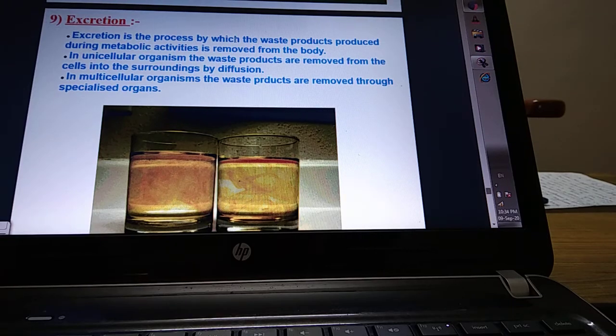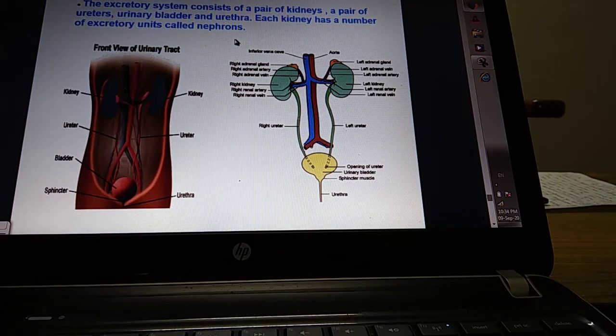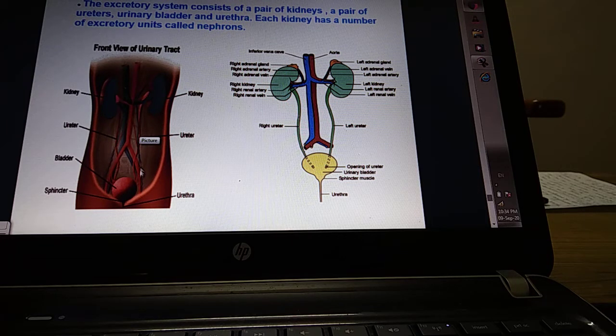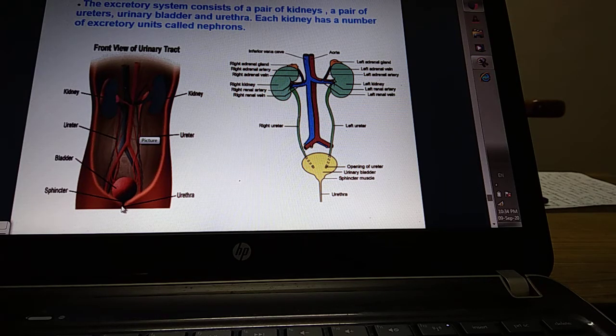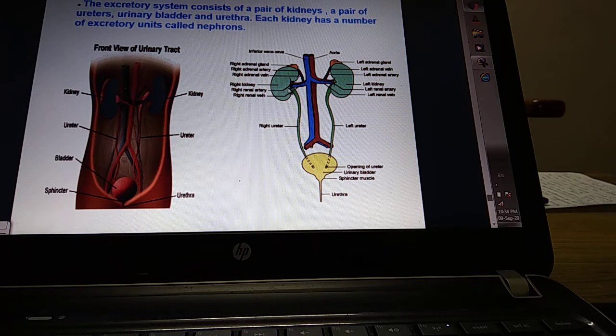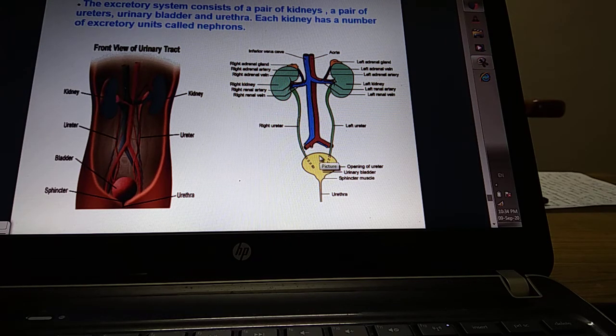Now let us come to the human excretion system. In humans, the main excretory organs are a pair of kidneys, then a pair of ureters - tubes which carry waste from the kidneys to the urinary bladder - then there is a bladder and urethra. Each kidney has a number of small excretory units which are called nephrons. Here in this structure you can see the position of the nephron and the kidneys where these are located.